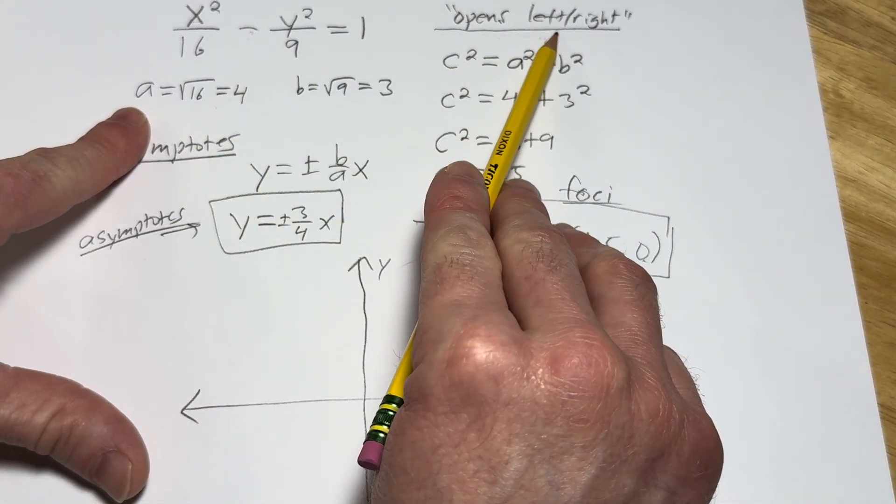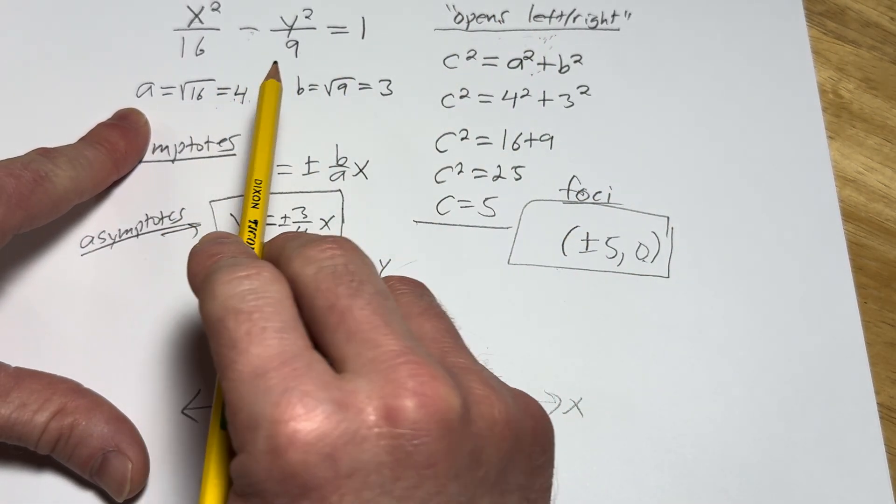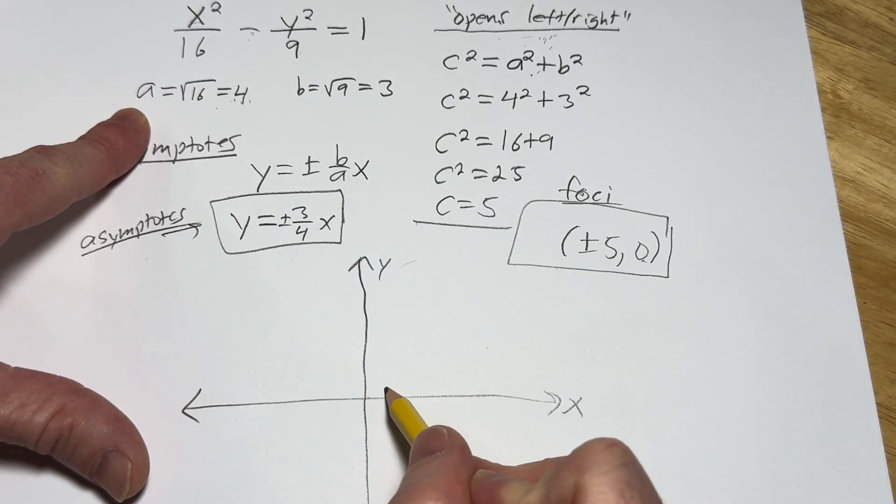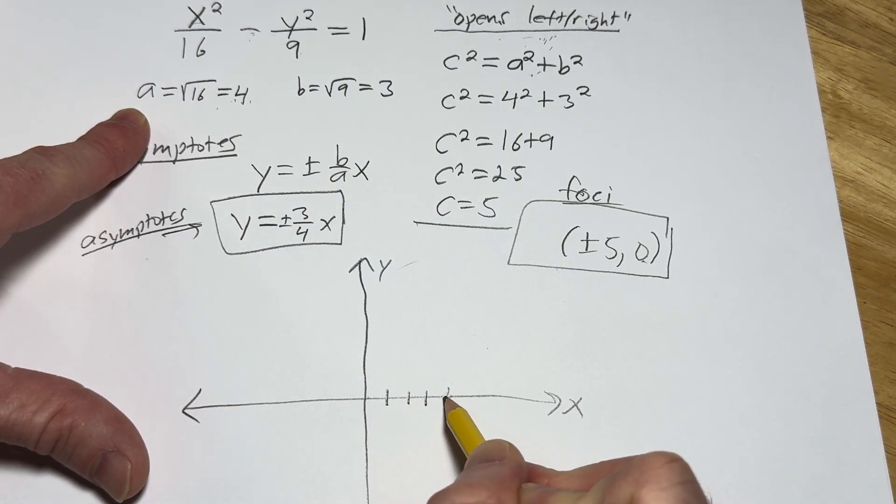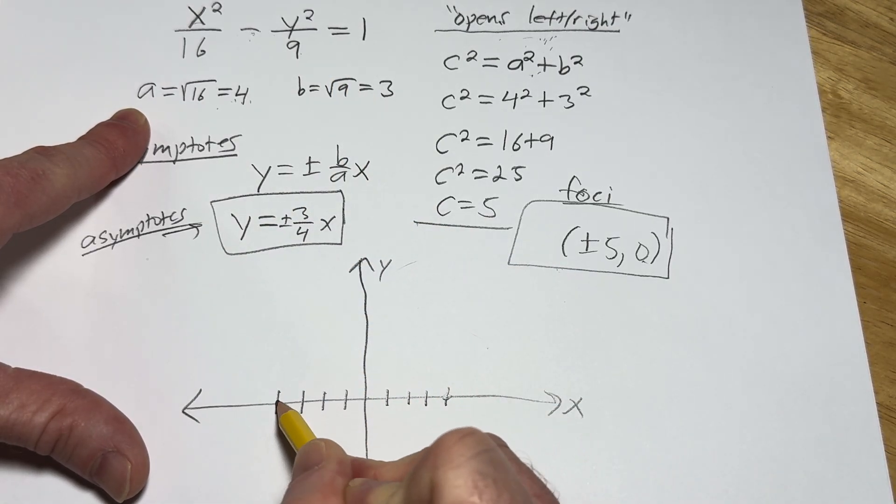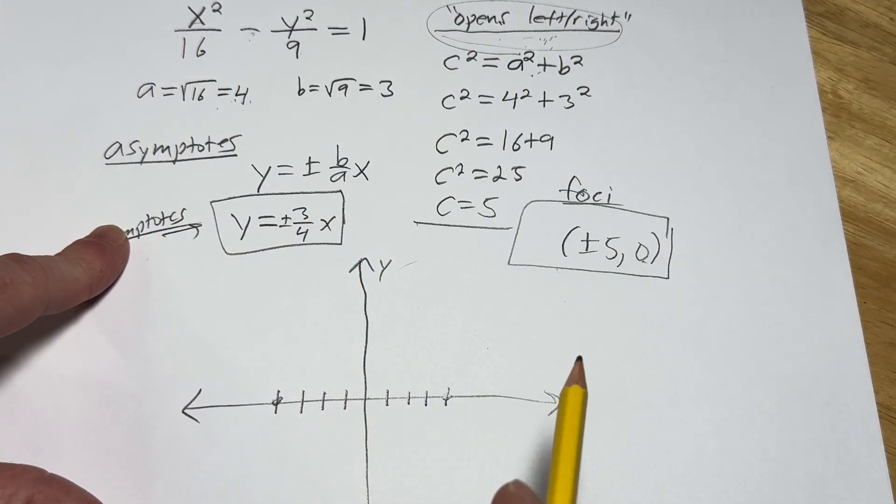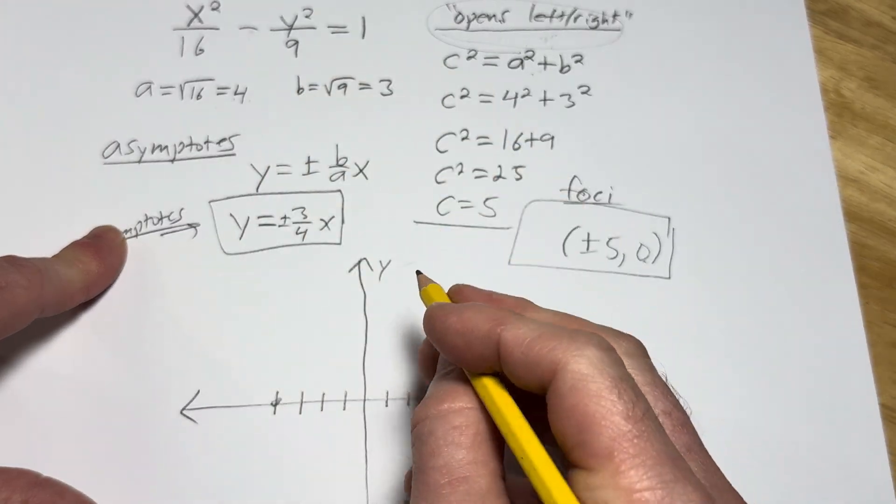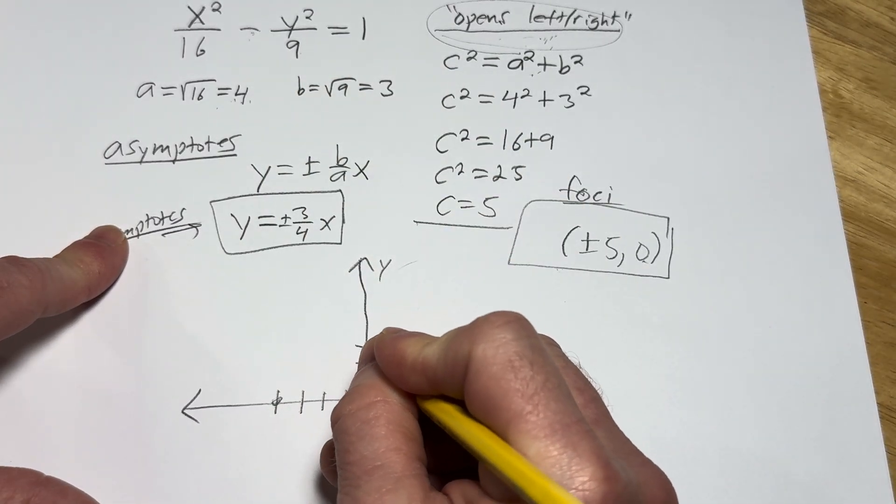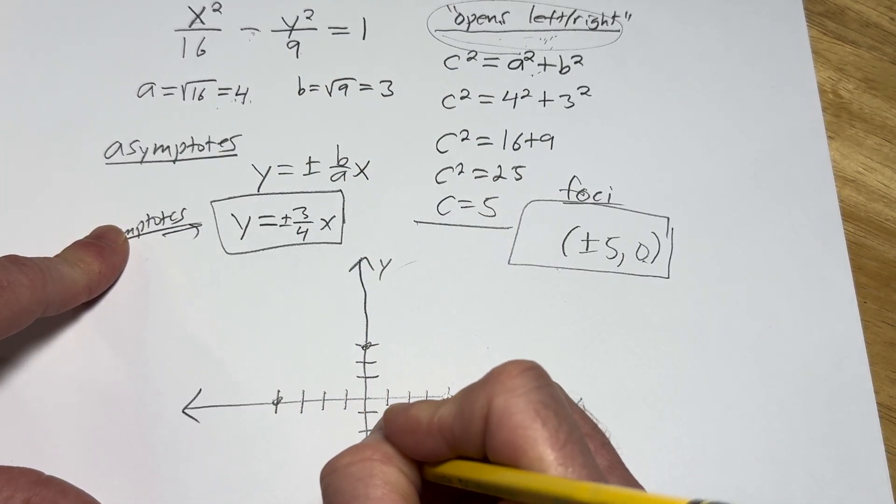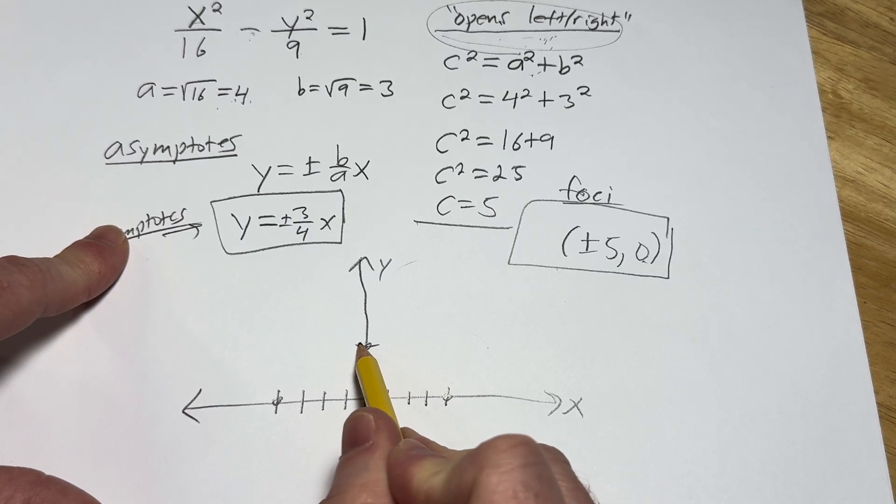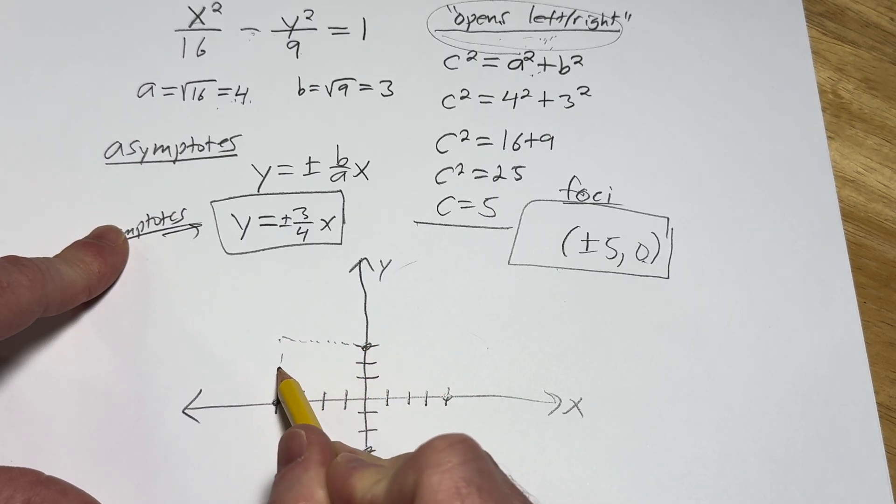So because it opens left and right, you go left and right by A from the center, which is 0, 0. So 1, 2, 3, 4. 1, 2, 3, 4. That's because it opens left and right. If it opens up and down, you go up and down by A. Now you go up and down by 3. And then you draw this rectangle. This rectangle is called the fundamental rectangle.